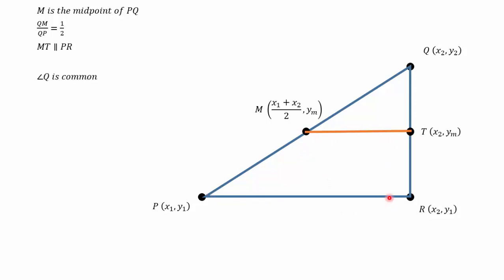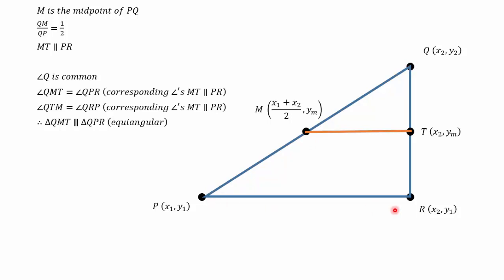We know that angle Q is common in both triangles. QMT is equal to QPR because they are corresponding angles where MT is parallel to PR. That makes the small triangle QMT similar to the larger triangle QPR because all three angles in each triangle are equal.